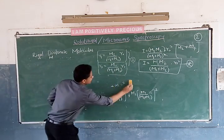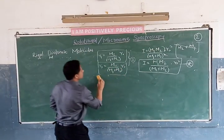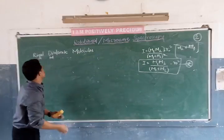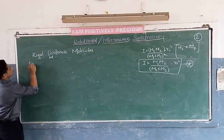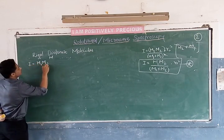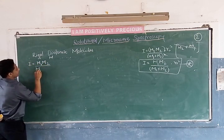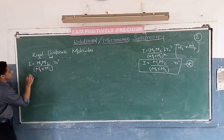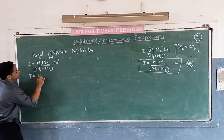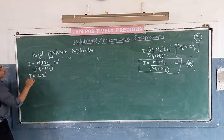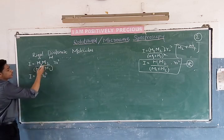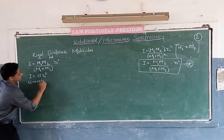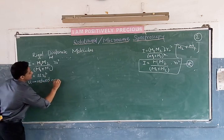So I have derived the expression: I equals M1·M2 divided by (M1 plus M2) times R0 squared. I will write the same expression as I equals mu times R0 squared, where mu is nothing but M1 times M2 divided by (M1 plus M2). I will name it as reduced mass.